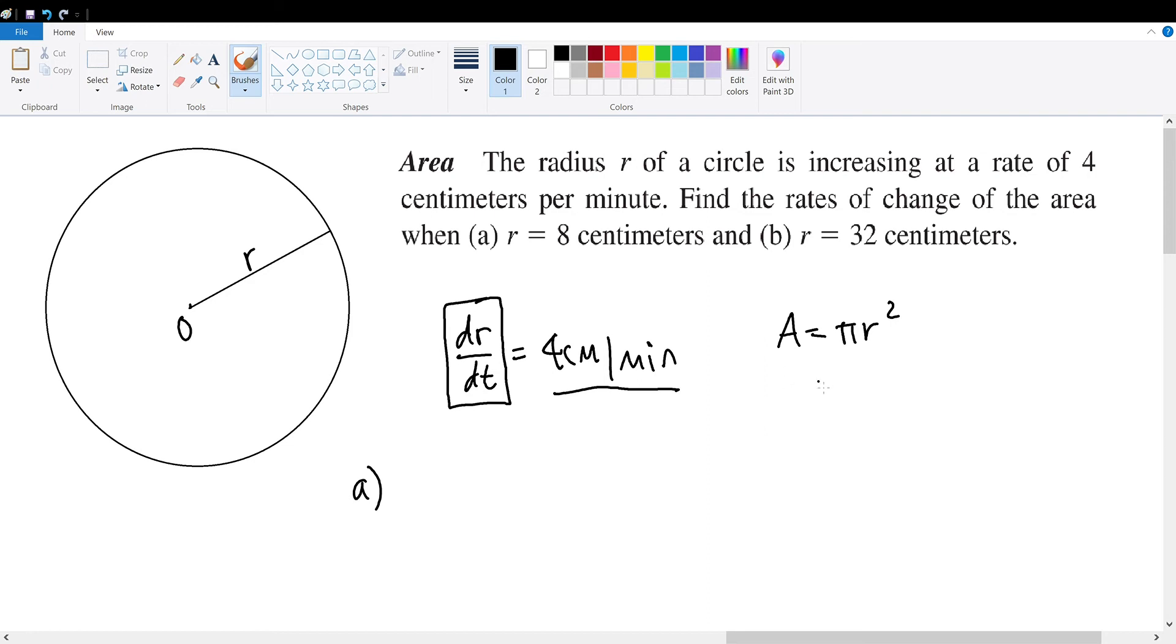And taking the derivative of this equation will give us the related rates in respect to both area and radius. Hence, if we use the chain rule, dA over dt is equal to pi times 2r times dr over dt, as by the chain rule.